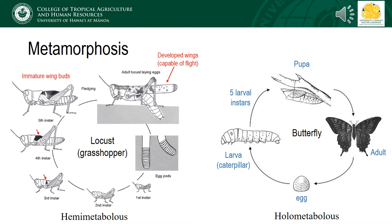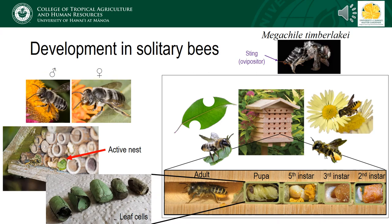Just like butterflies, a female lays an egg, which hatches into a larva that grows, undergoes pupation, and finally emerges as an adult bee. As mentioned in the first lecture, we have 19 species of introduced bees in Hawaii, in addition to the approximately 70 species of native Hylaeus. With the exception of honeybees, all of the remaining bees in Hawaii have solitary lifestyles.